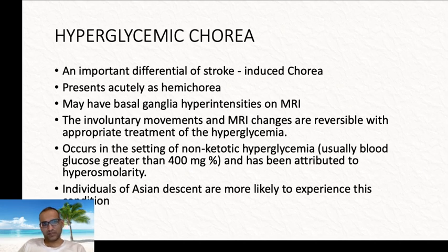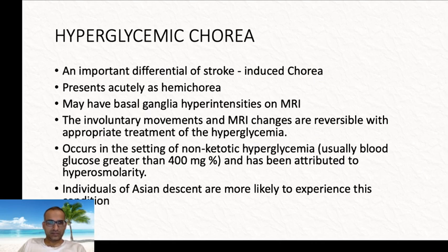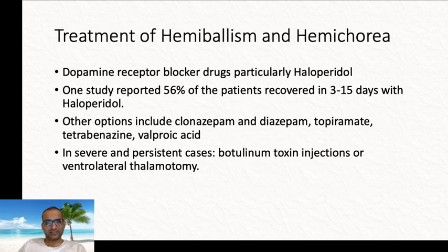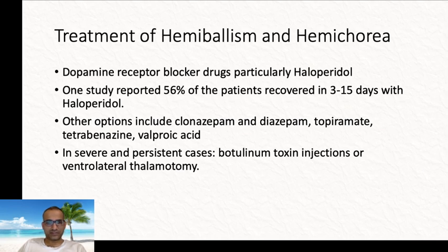The article discusses hyperglycemic chorea as an important differential diagnosis for stroke-related chorea. This can present as hemicorea and may show MRI abnormalities with high signal intensity in the basal ganglia. However, both the clinical features and MRI changes resolve after correction of hyperglycemia. This is thought to be secondary to non-ketotic hyperglycemia, attributed to hyperosmolarity, and individuals of Asian descent are more likely to develop it. Treatment for hemiballism and hemicorea is usually dopamine-blocking drugs like haloperidol, with about half of patients responding and recovering within 3 to 15 days. Other options include benzodiazepines, topiramate, tetrabenazine, and valproate.